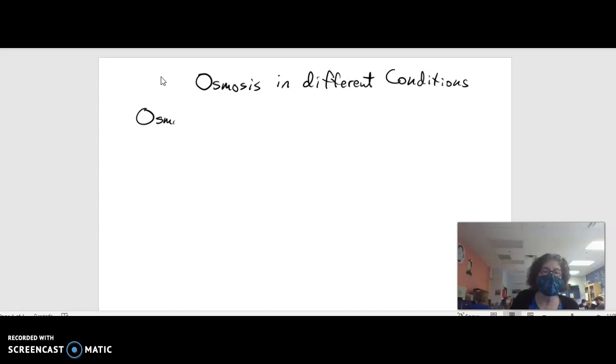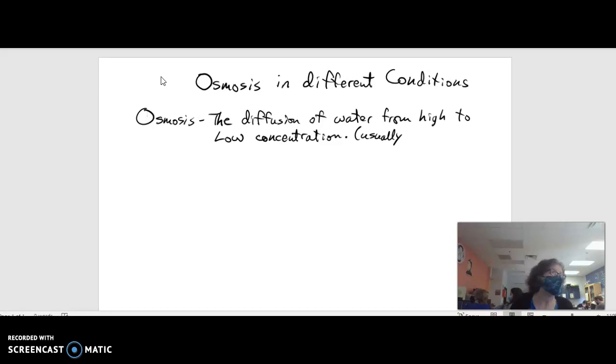So osmosis, first of all, let's just define that. It is the diffusion of water. The diffusion of water molecules from where the water is high concentration to where it is low. And usually it's going across some sort of a membrane, either moving out of a cell or into a cell. In fact, in every situation you guys will look at in AP Biology, it's going to be always across a cell membrane.